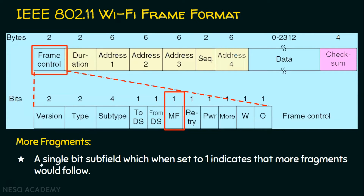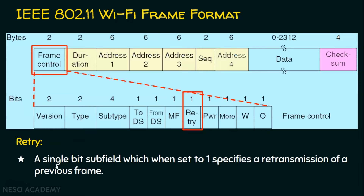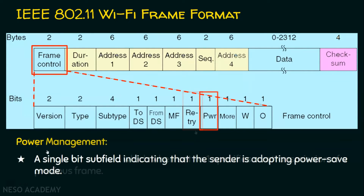The MF (More Fragments) subfield is a single bit that, when set to 1, indicates that more fragments would follow. Then comes the retry subfield — a single bit set to 1 specifies a retransmission of a previous frame. The power management field is a single-bit field that indicates the sender is adopting power save mode; if the sender is operating in power save mode, this field is set to 1.